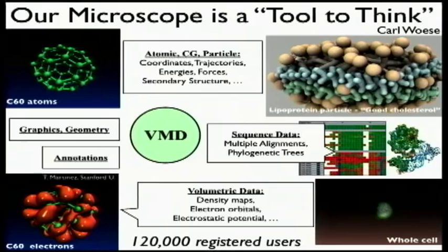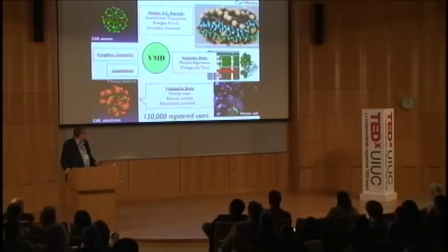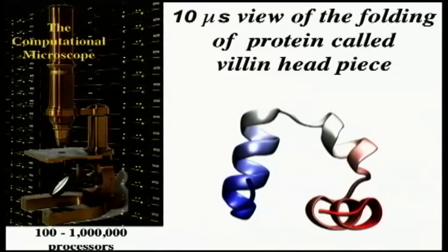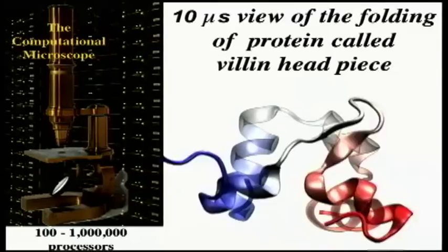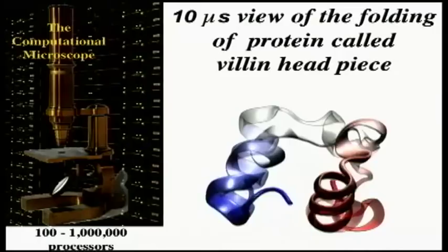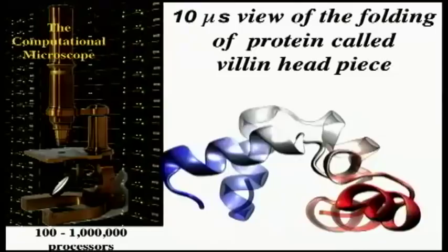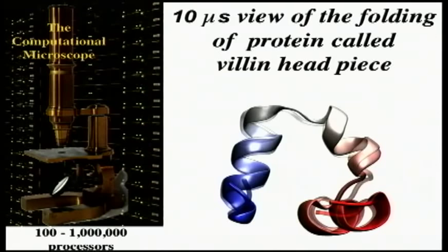Now let's see the computational microscope really at work. Here I have the first example — just a little protein called villin headpiece. We stretch it out in the computer but leave as a shadow the form of the protein as observed for many years in crystallography. And you see how the computer folds the protein back into its shape in the cell. The computer can simulate these proteins so accurately that at the very end you get amazing agreement between the computed protein and the real protein.